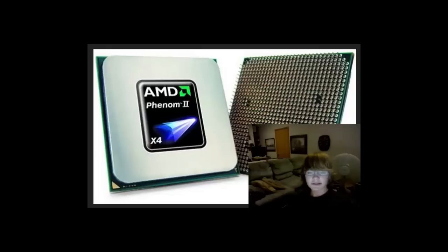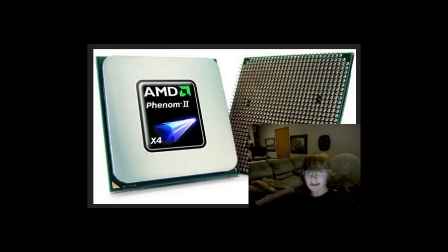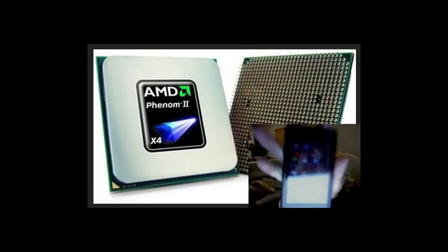Every computer has a processor. On your screen is a picture of what an actual processor looks like. The two main brands of processors in computers are Intel and AMD. Processors also can be found in mobile devices like phones and tablets — for example, my phone here has a Tegra 2 processor.